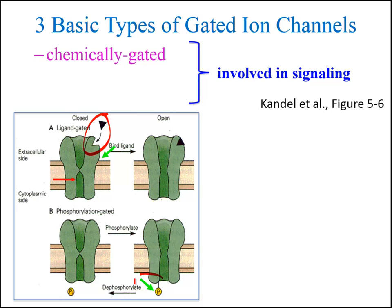The second stimulus is phosphorylation of the ion channel. The energy from binding of high-energy phosphate groups can cause some ion channels to open or close. This might occur, for example, due to activation of G proteins and second messenger systems. Examples involving phosphorylation-gated channels include those involved in olfactory, auditory, and visual or phototransduction. Often ligand-gated and phosphorylation-gated channels are grouped together into one category of chemically-gated channels.